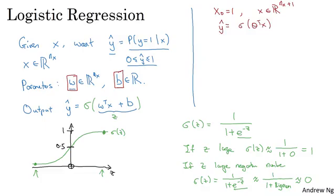And then you define y hat to be equal to sigma of theta transpose x. In this alternative notational convention, you have a vector parameters theta: theta 0, theta 1, theta 2, down to theta nx. And so theta 0 plays the role of b, that's just a real number, and theta 1 down to theta nx play the role of w.